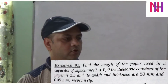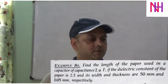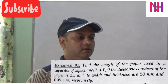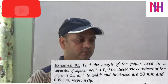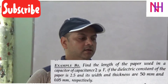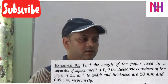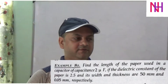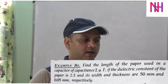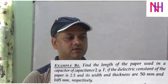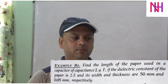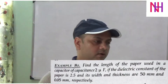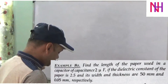Next question is: find the length of the paper used in a capacitor of capacitance 2 µF, if the dielectric constant of the paper is 2.5 and its width and thickness are 50 mm and 0.05 mm.